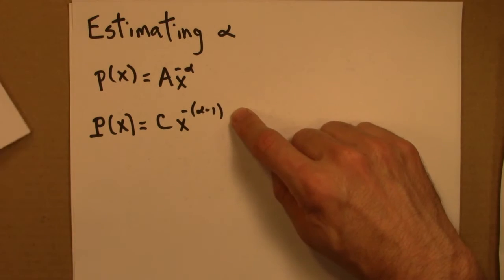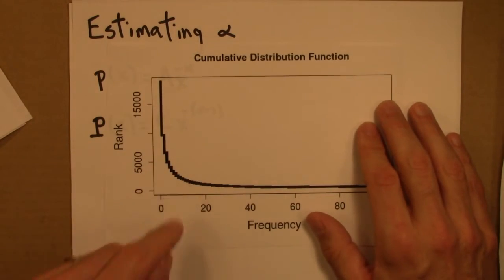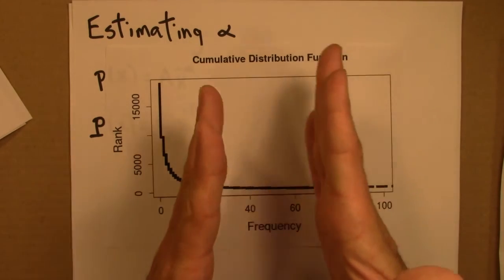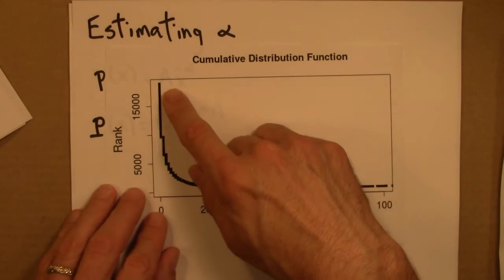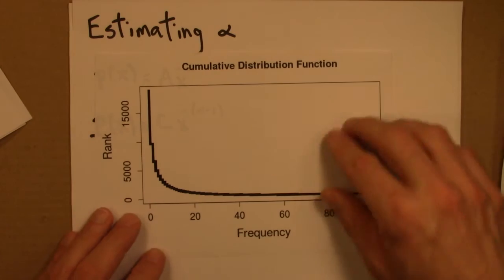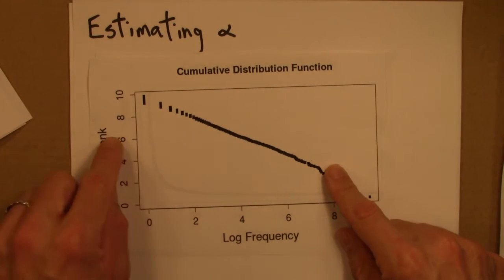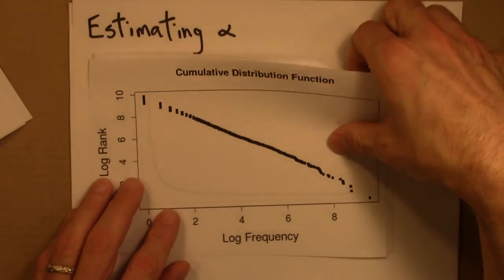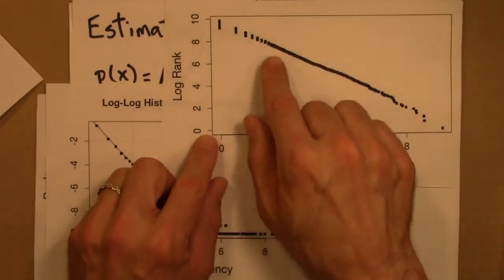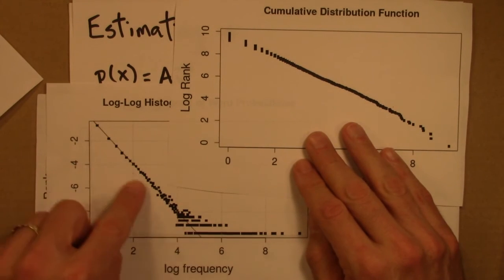We could also work with the cumulative distribution function, or equivalently the rank distribution. These are nice because we don't have any of the arbitrariness associated with histograms — we don't need to decide what the bin width is or whether to do logarithmic binning. It's just a regular function with no choice in how we plot it. So it's a much less arbitrary, more statistically stable and robust approach. On a log-log plot, the CDF shows nice linear behavior, and the cumulative distribution function is always going to be a smoother result without the sampling and binning challenges of a log-log histogram.